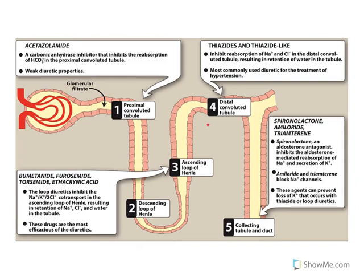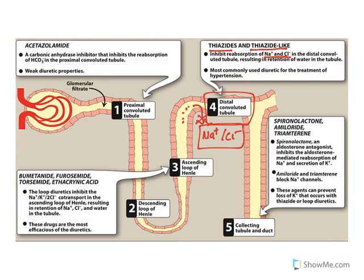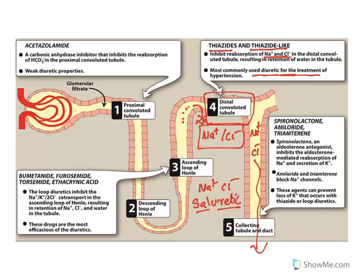At the distal convoluted tubule, there is a sodium-chloride symporter that reabsorbs sodium and chloride into the body. Thiazide and thiazide-like drugs inhibit this sodium-chloride transporter, causing sodium and chloride to be lost in urine. These are the most commonly used diuretics for treating hypertension. Because they cause salt loss, they are also called saluretics.